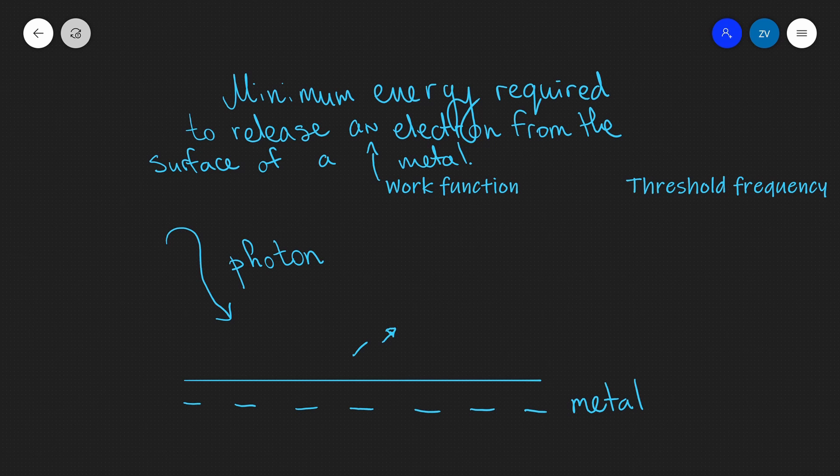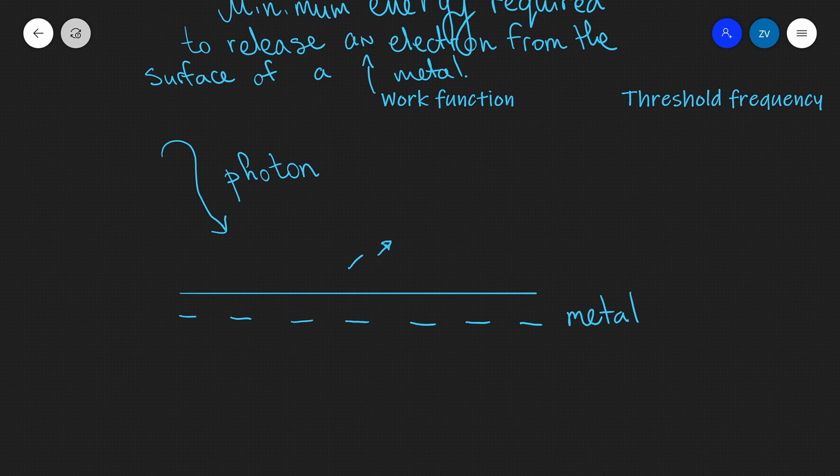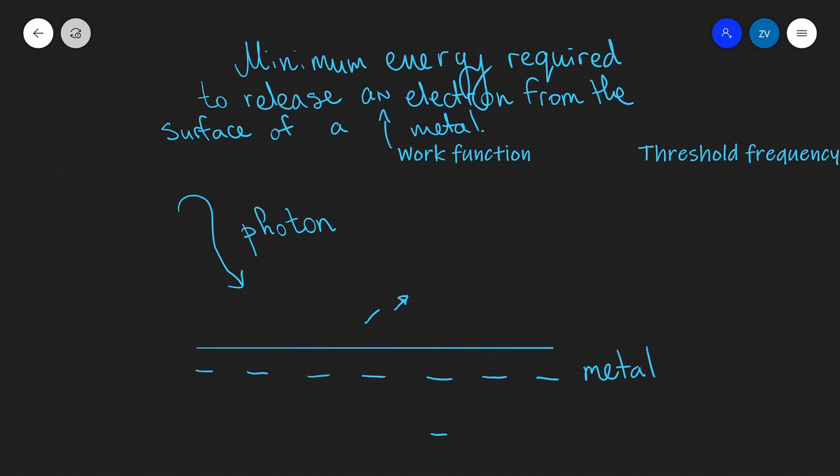Why is it a minimum energy? Well, a lot of the electrons actually required more energy. For instance, if some of them are in a lower energy state, let's say that some of them are over here, then they would require more energy for them to be released. So, most of the electrons require more energy. However, the work function is the minimum energy required to release an electron from the surface of a metal.